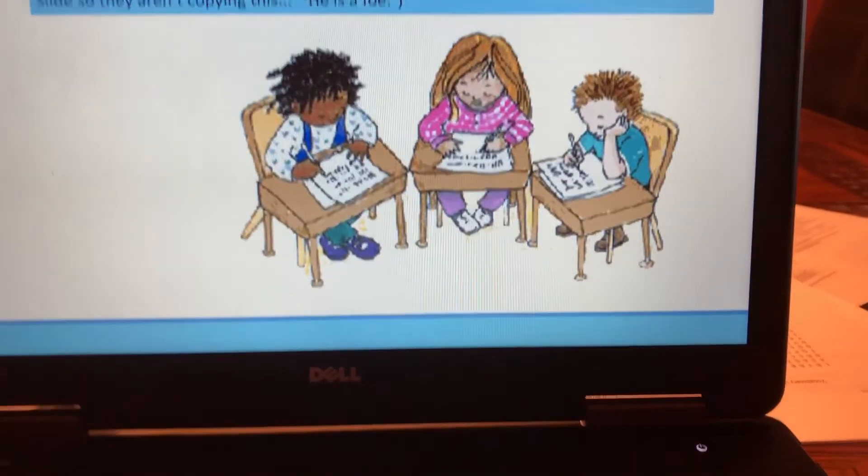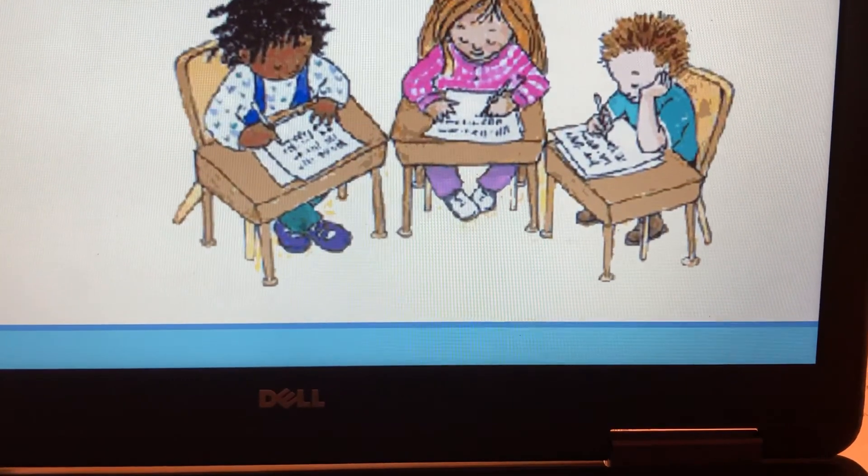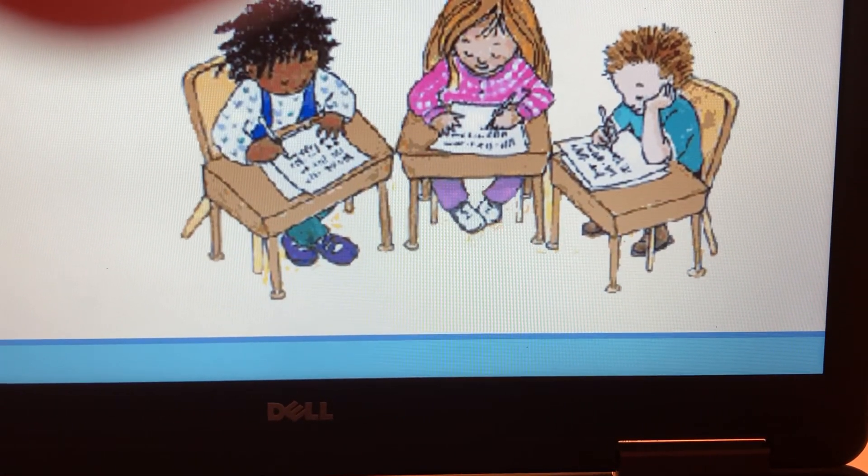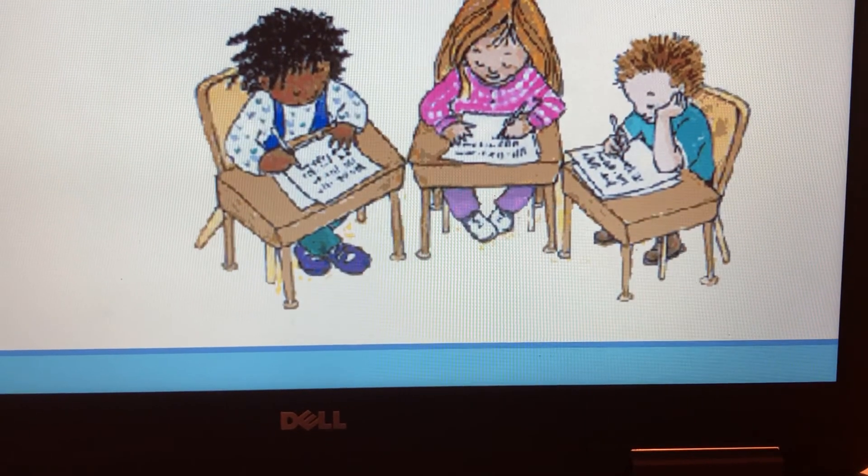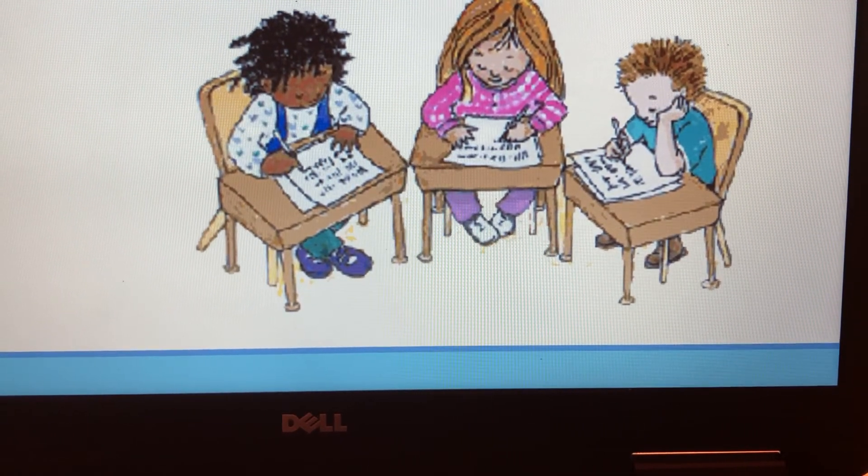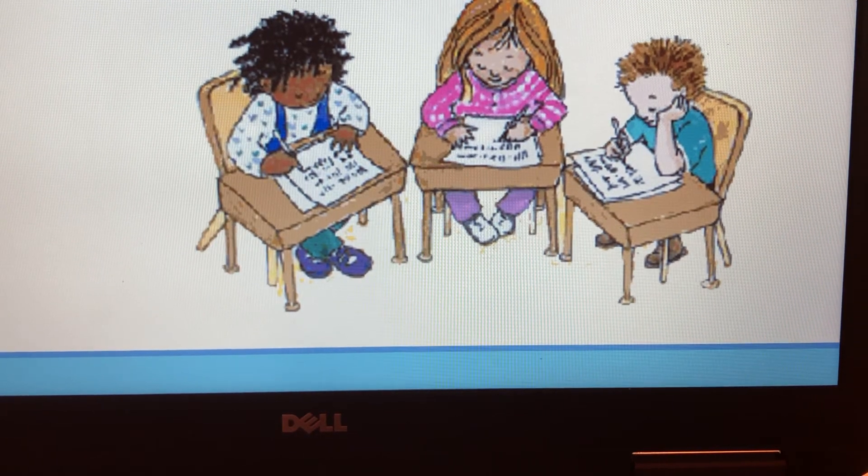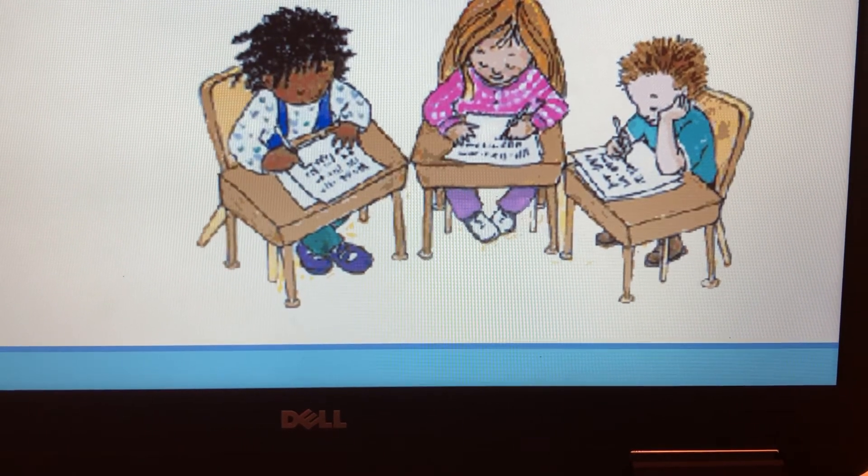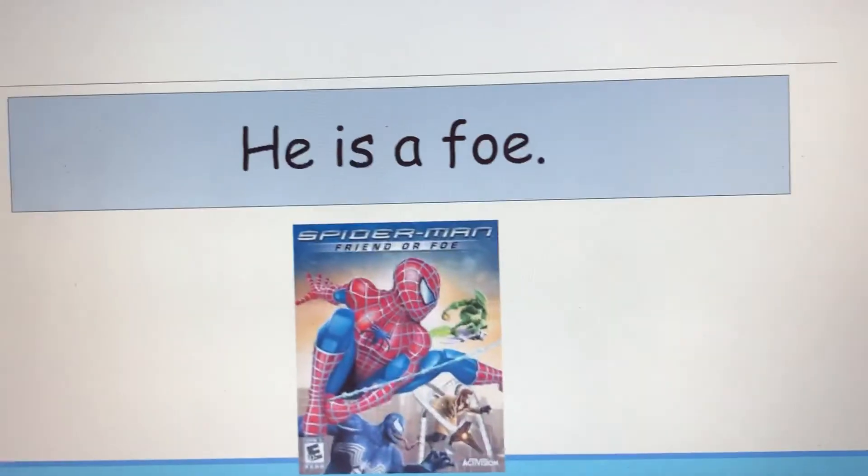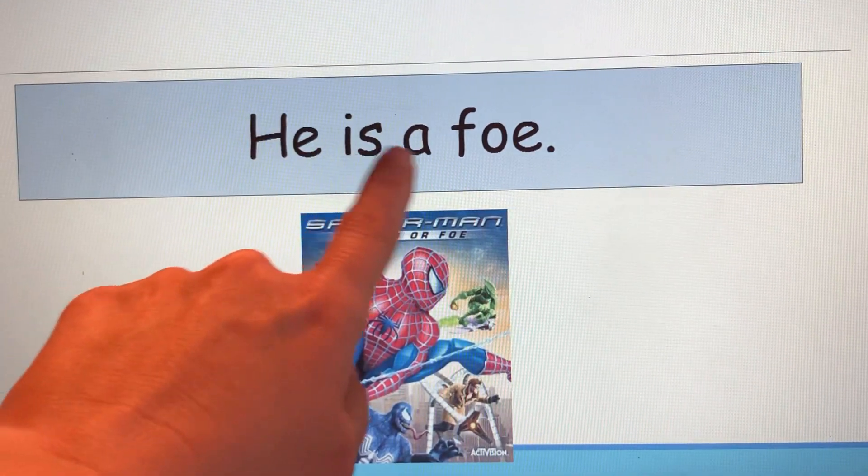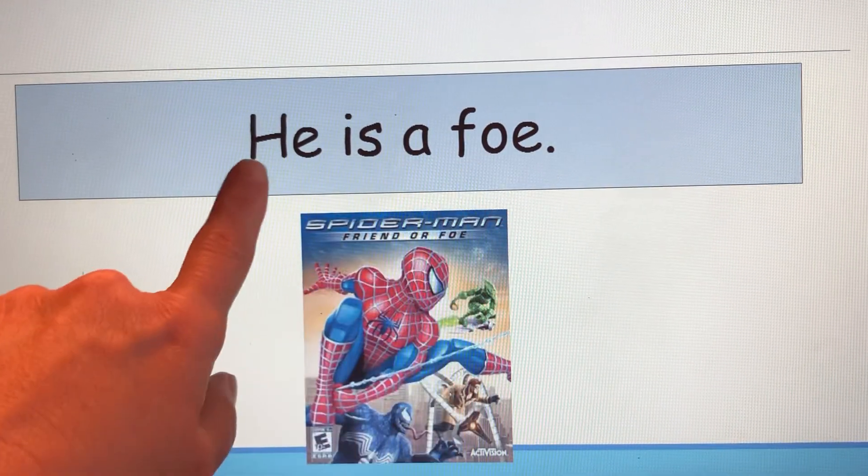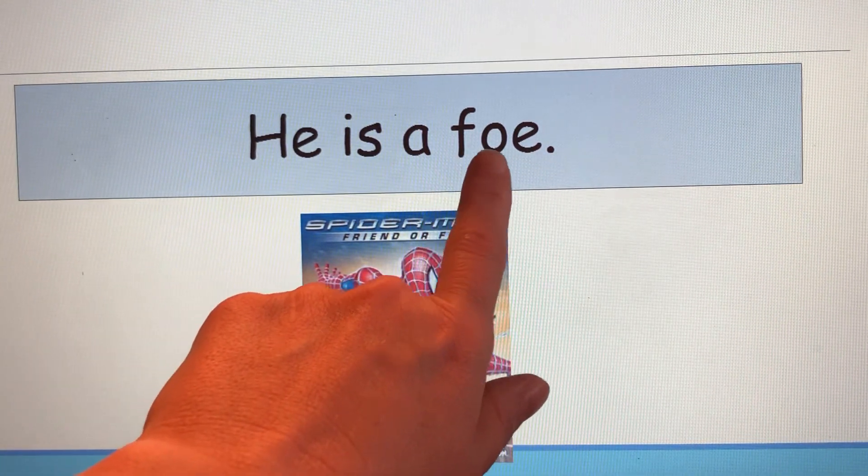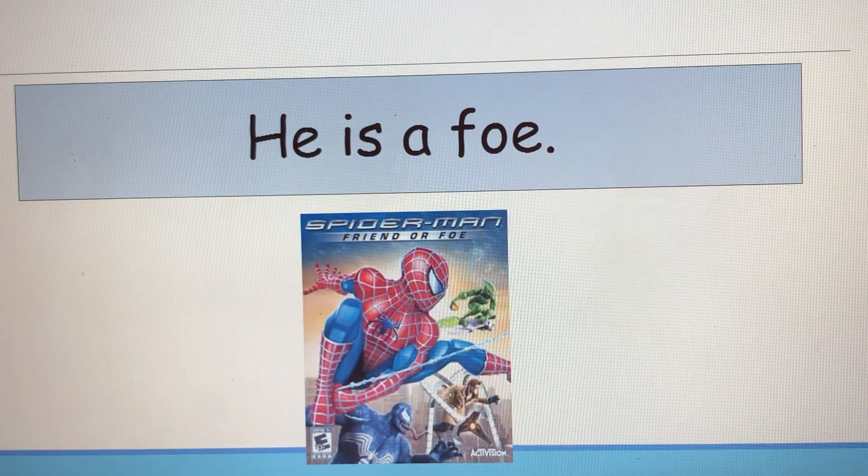Let's do one more sentence today. This one's a little shorter. It's just four words. He is a foe. He is a foe. Pause the video and write that sentence and then start it again to check your work. There we go. Did you write: He is a foe, starting with a capital H, ending with a period and spelling foe F-O-E? Well, great job.